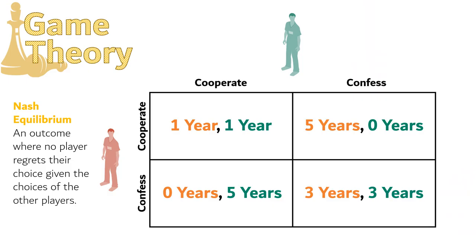The Nash Equilibrium for the Prisoner's Dilemma is found by following each player's dominant strategy. If a player has a dominant strategy, then the Nash Equilibrium must be found in the path for that dominant strategy. And so that's how we know that the yellow rectangle here is going to be the Nash Equilibrium.